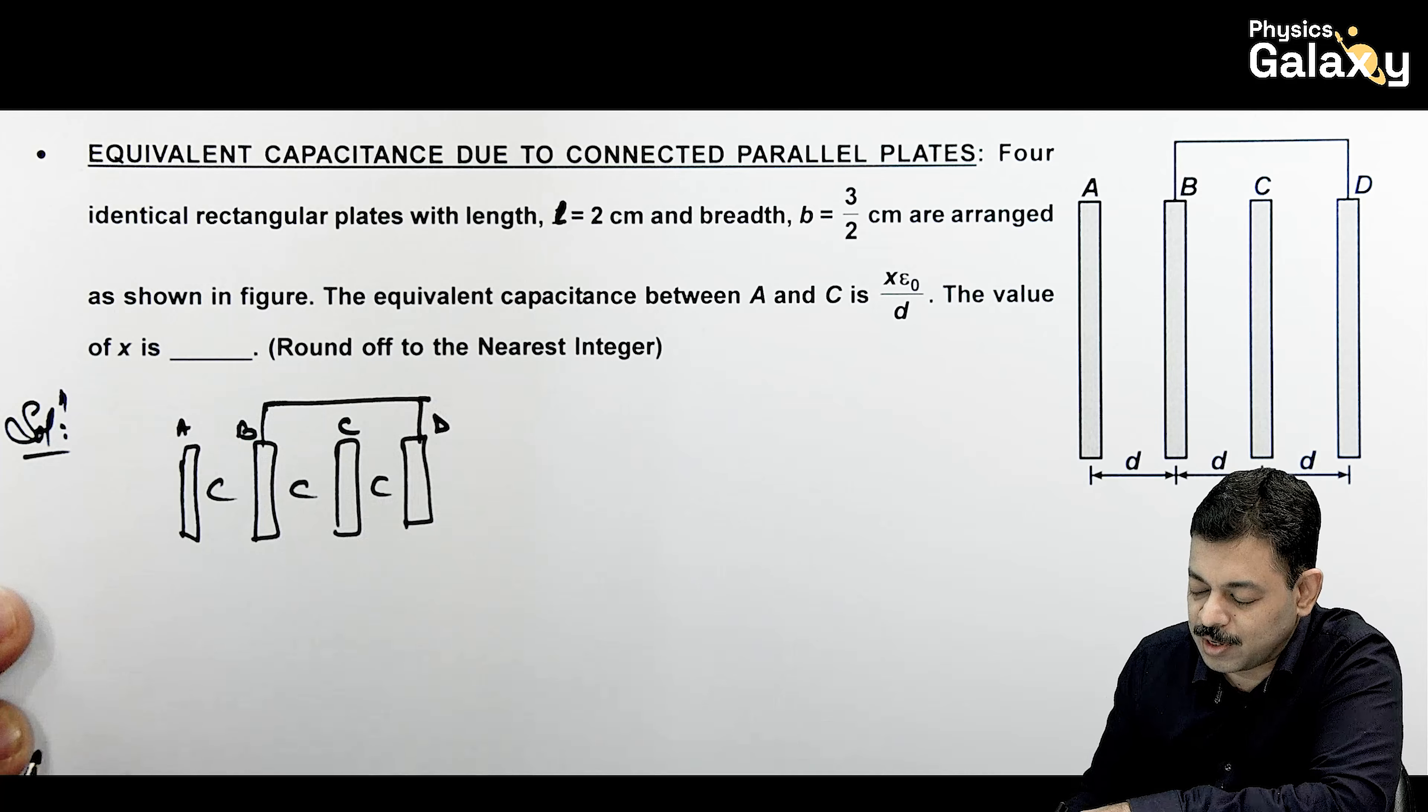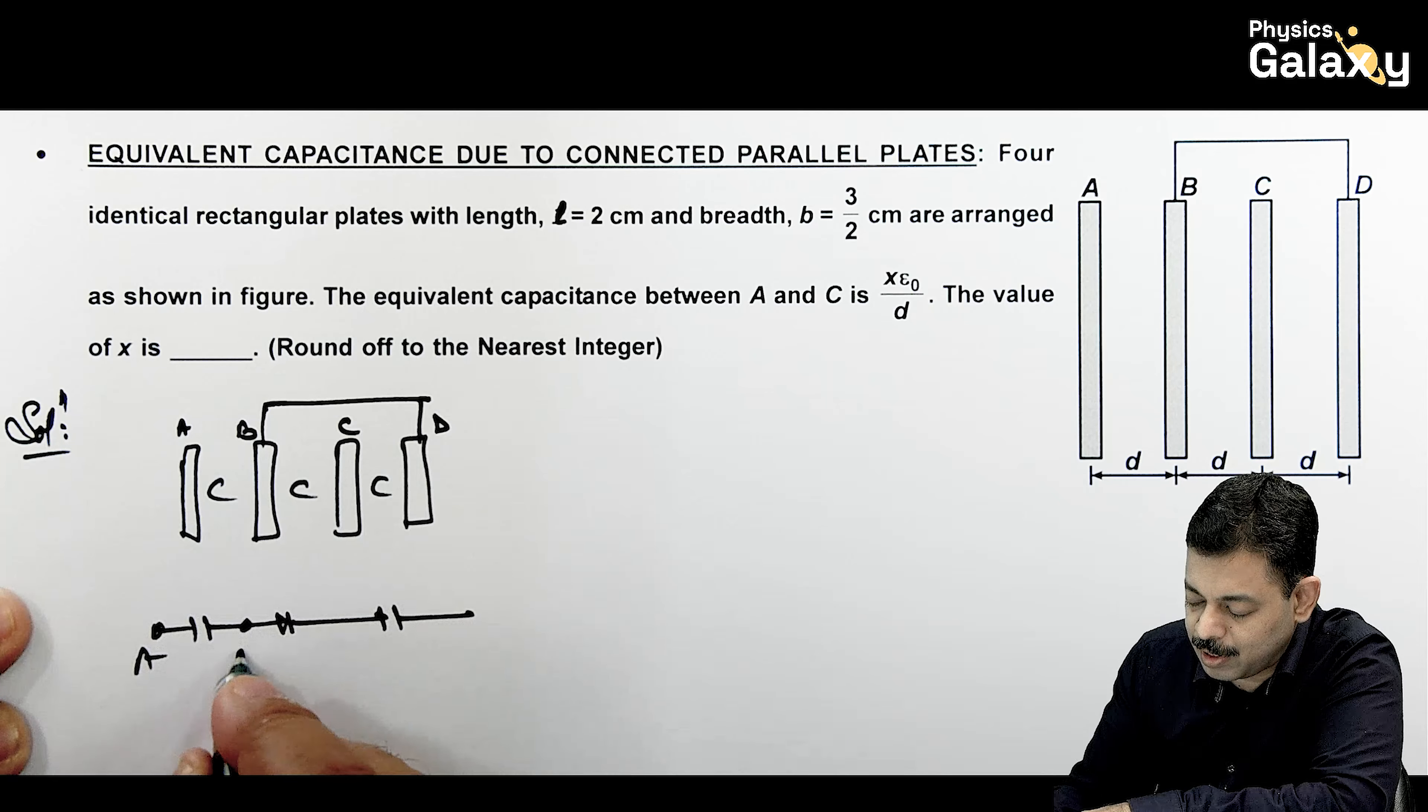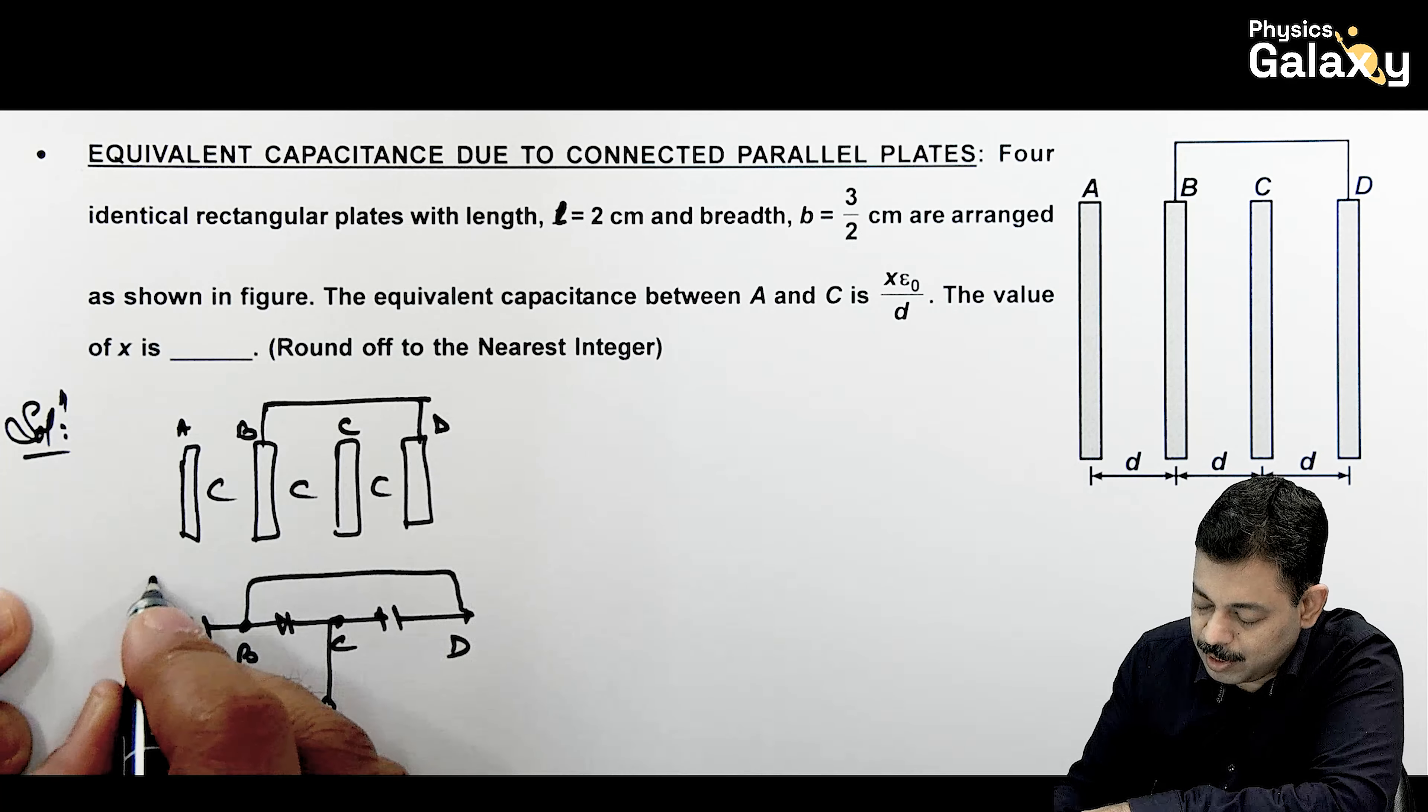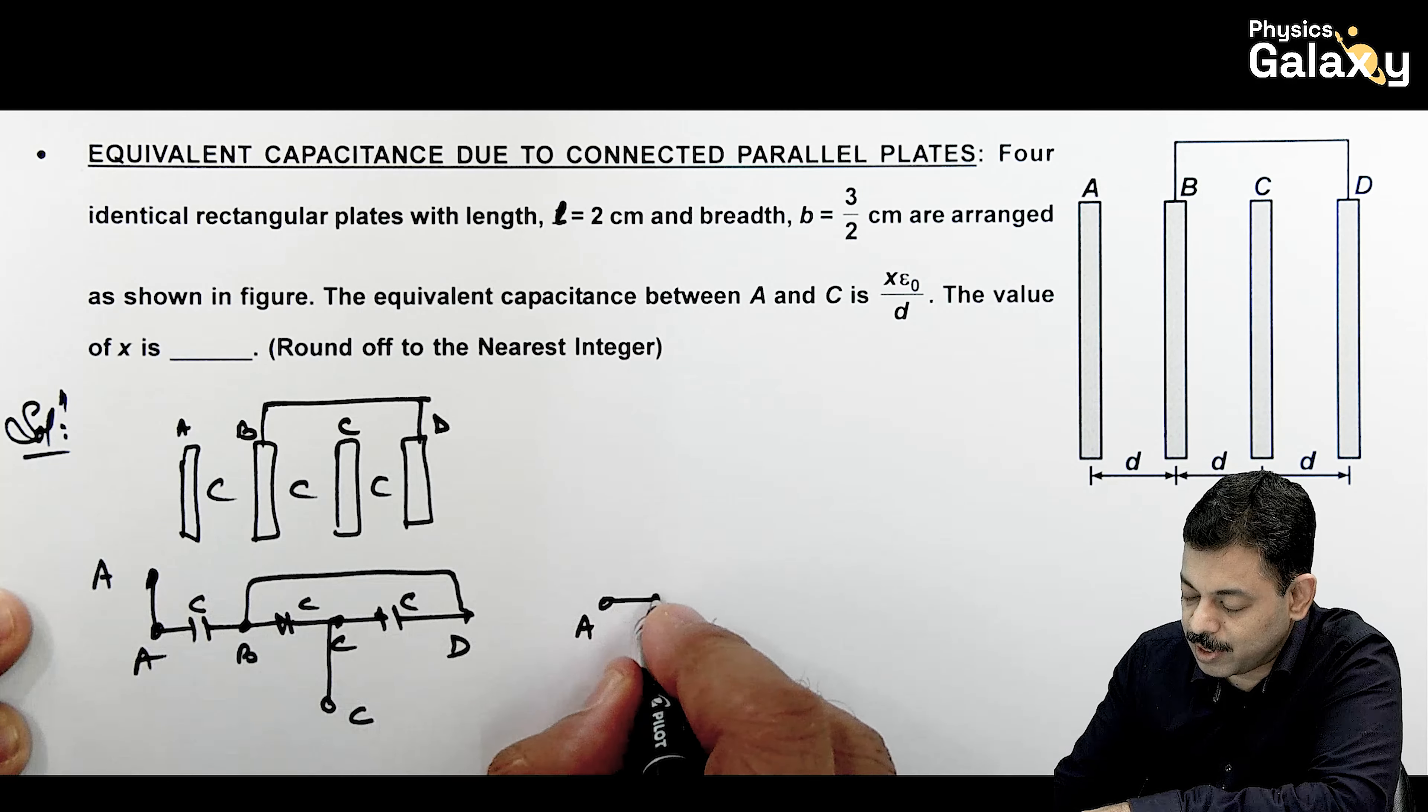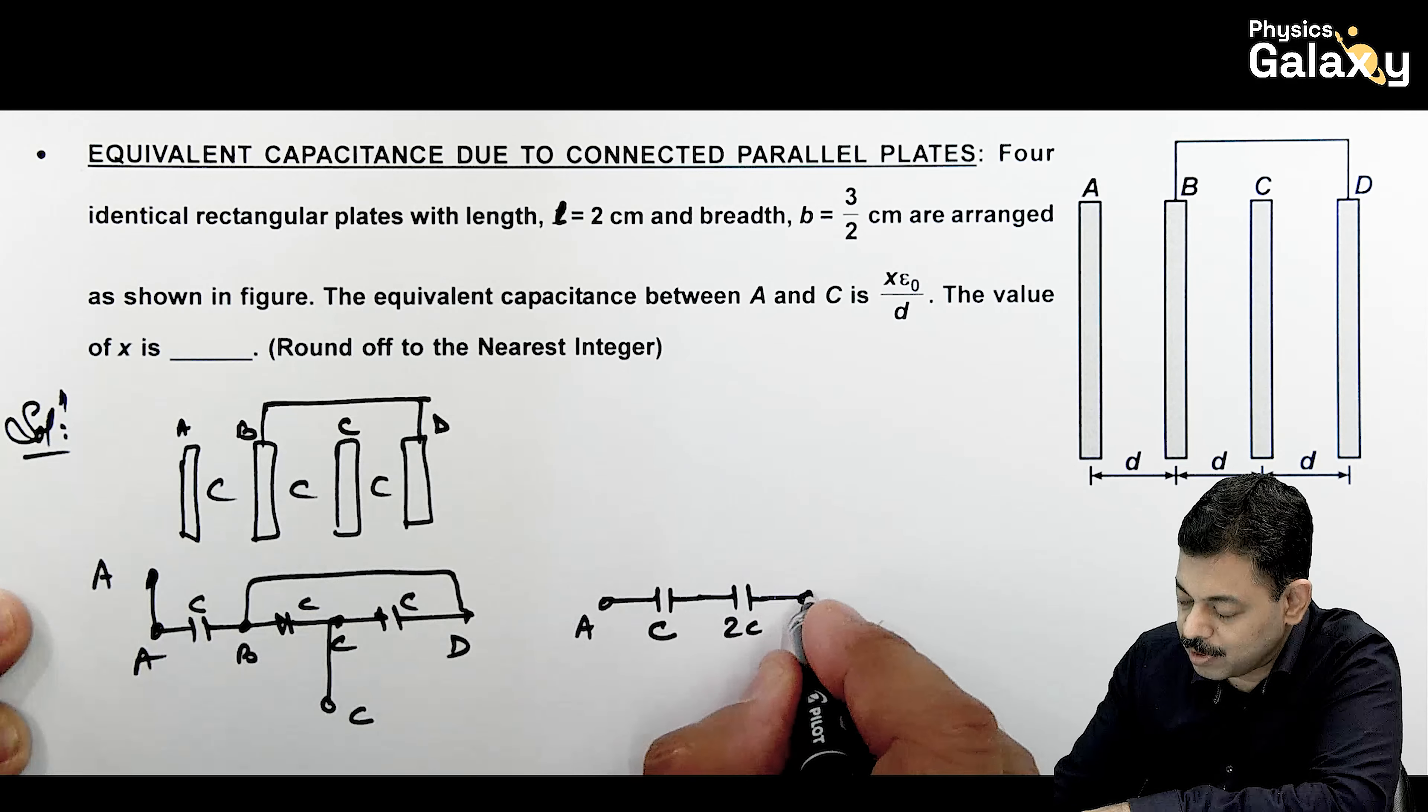Now in this situation agar hum dhyan se dekhain, to is ka equivalent combination banane ke liye hum 3 capacitor ko ek ke aage draw karenge. Plates are A, B, C, and D. B is connected to D. And this C and A terminals are open. So ye wala C or C donoh parallel mein aagaya in series with this C aagaya. So aap ye keh sakta hain. Across terminal A there is a capacitor C. And then there are 2 capacitors C and C in parallel. This will be 2C. And then here it is C.